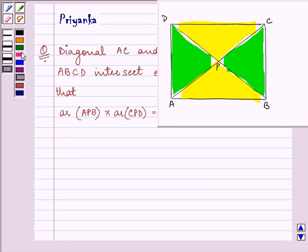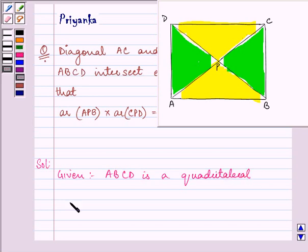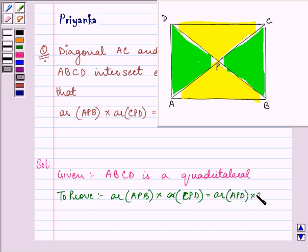Right? So let's just start with our solution. What is given to us is ABCD is a quadrilateral. We need to prove that area of APB into area of CPD is equal to area of APD into area of BPC.